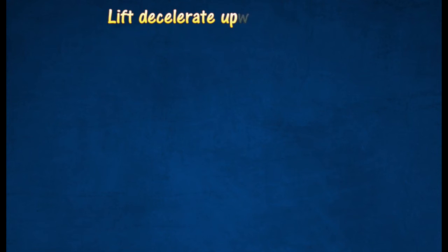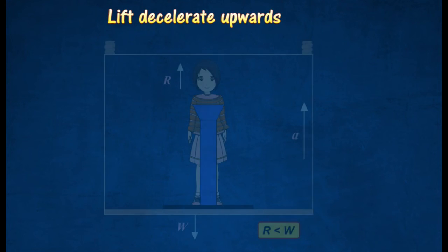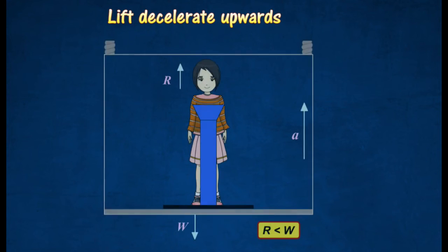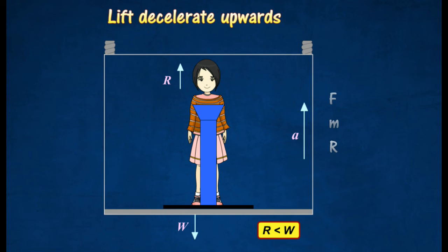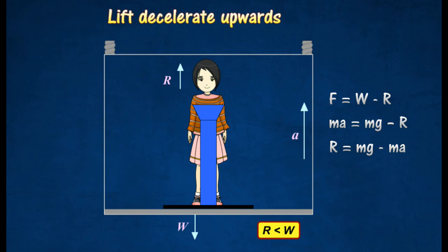If the lift decelerates downwards, the reaction force, R, will be less than the weight of the girl. The resultant force will thus be given by the following equation. The girl will feel lighter.